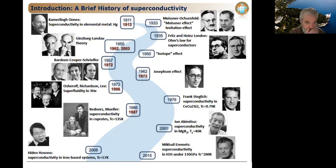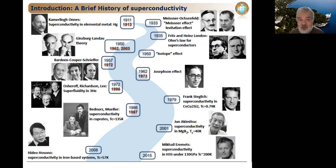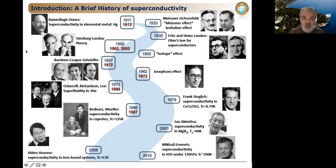Relatively soon, in 1957, Bardeen, Cooper, and Schrieffer presented the microscopic theory of superconductivity — the BCS theory, named from their initials — and they received the Nobel Prize in 1972.